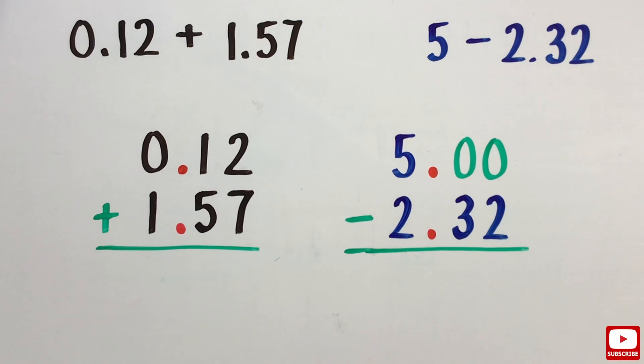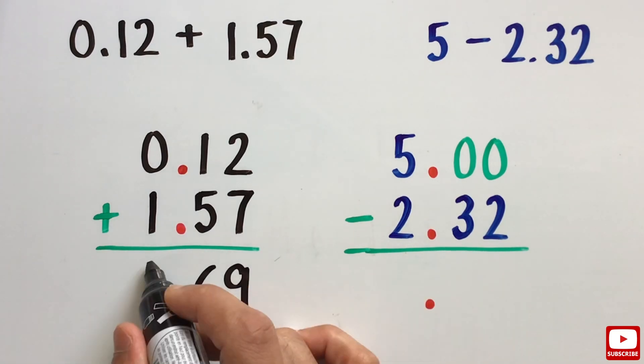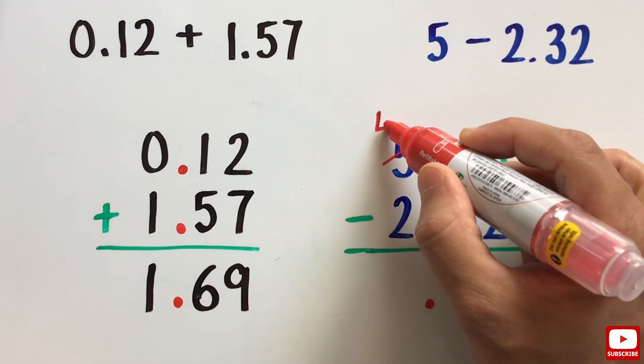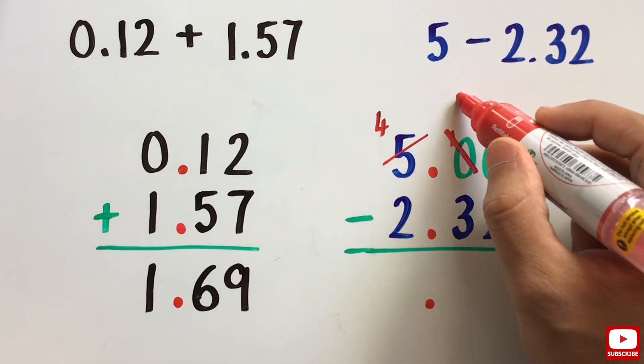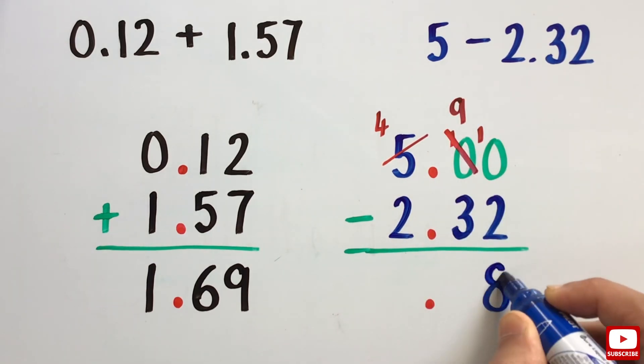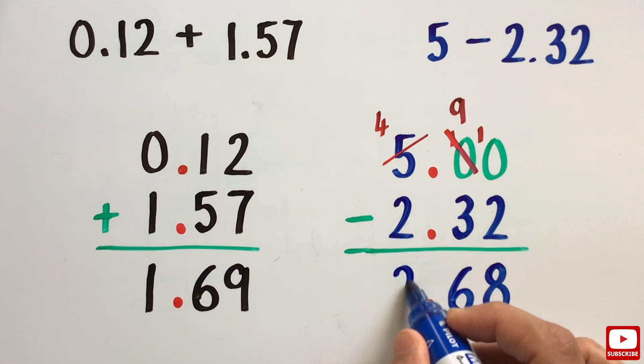Then we write the decimal point in the answer in such a way that all the decimal points are now lined up. Finally, we add the two decimal numbers or subtract a number from the other moving from right to left the same way as we do for whole numbers.